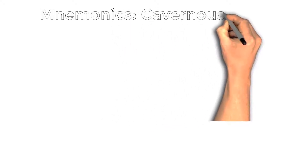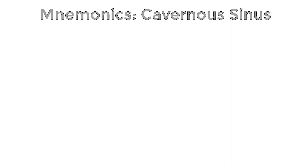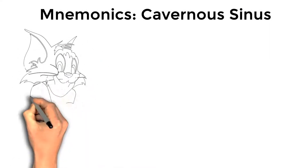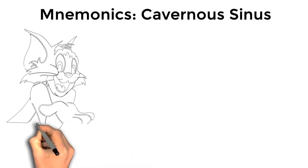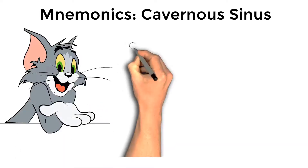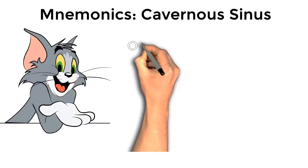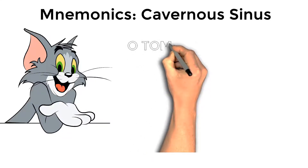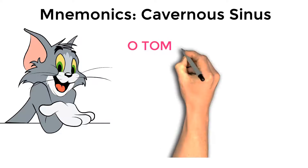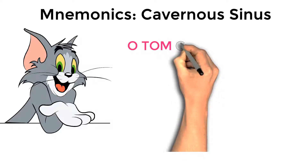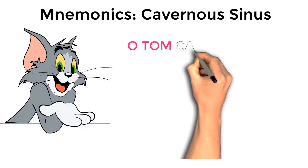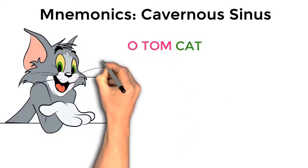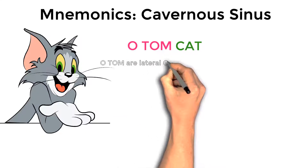So I'm using Tom from Tom and Jerry — which is a cat — as the basis for the mnemonic. The mnemonic is 'O TOM CAT': O-T-O-M spells 'O TOM' and C-A-T spells 'CAT'. These seven letters form the complete mnemonic for the cavernous sinus.